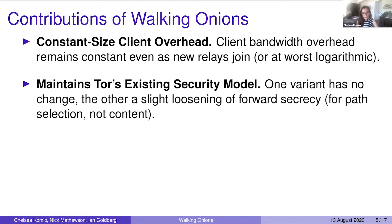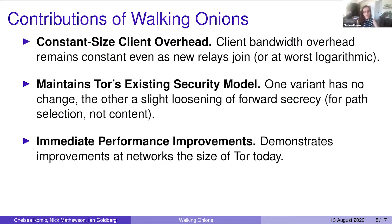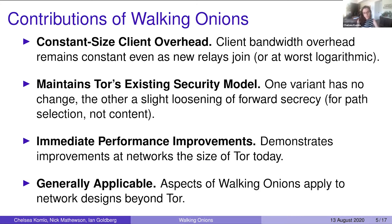We present two variants. One has no change in TOR's model. The other has a slight weakening in forward secrecy, but only for the selection of relays in the path, not actually for content that is sent. We demonstrate immediate performance improvements at networks the size of TOR today, and some design choices of Walking Onions apply to network designs beyond TOR.